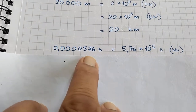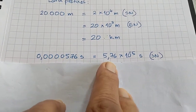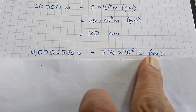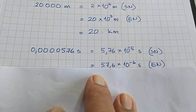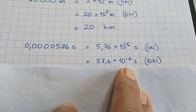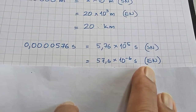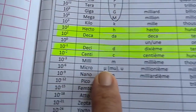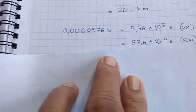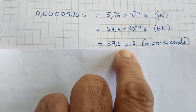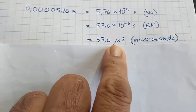Another example: 0.0000576 seconds = 5.76×10^-5 seconds in scientific notation. In engineering notation it is 57.6×10^-6. But 10^-6 is micro, so you can write that as 57.6 microseconds — where the symbol is the Greek letter mu.